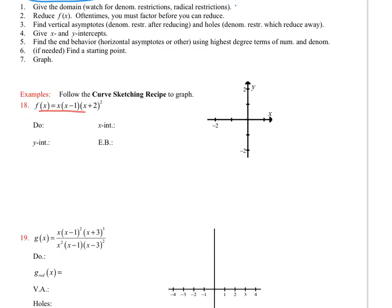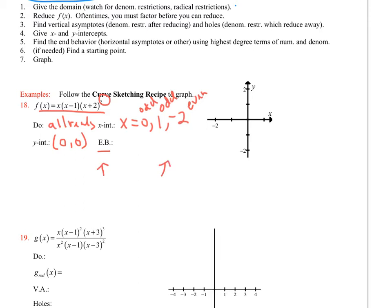For number 18, this is just a polynomial already in factored form, so we find the zeros for our x-intercepts: x equal to 0, x equal to 1, and x equal to negative 2. Notice that the zeros at 0 and 1 are single — so odd multiplicity — and the zero at negative 2 is squared, giving it even multiplicity, which means a bounce. Domain is all reals. The y-intercept is at (0, 0). End behavior: this is a fourth-degree polynomial with a positive leading coefficient, so both ends go off to positive infinity.